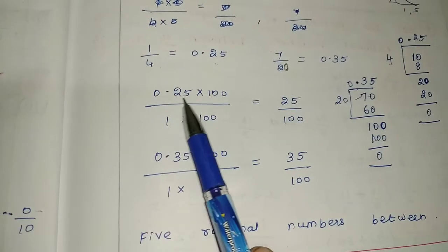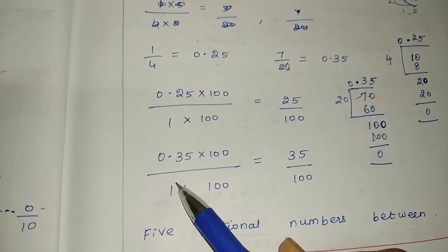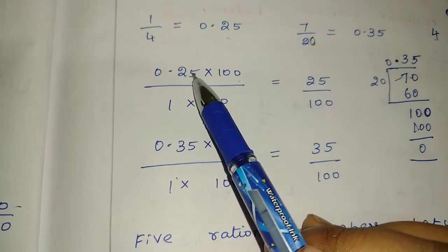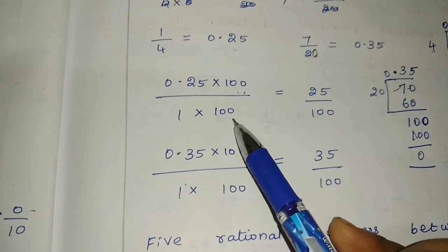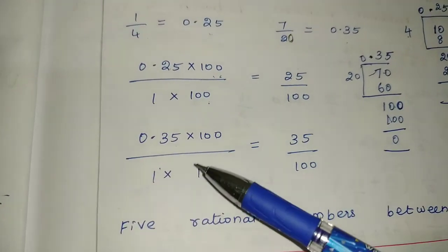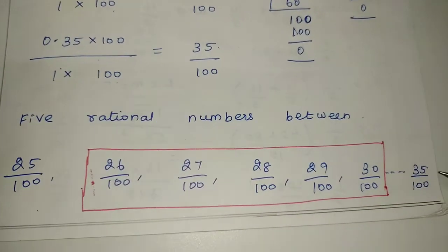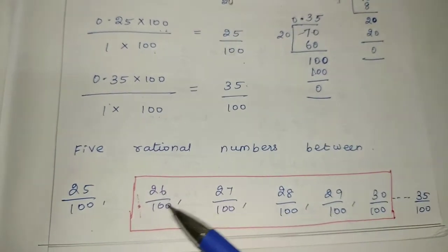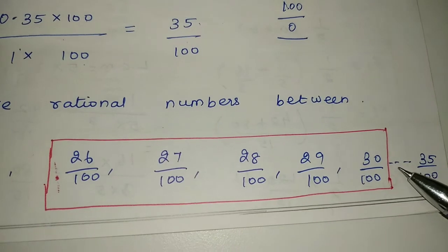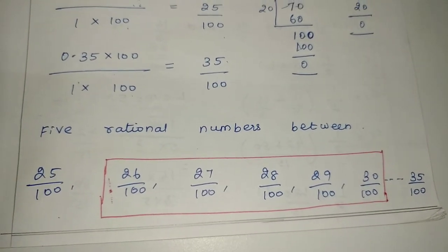The decimal form will be two digits. I will add 1 in the denominator — multiply by 100. In the numerator it will be 100 as well. So 0.25 becomes 25 by 100, and 0.35 becomes 35 by 100. I have 5 rational numbers between them — starting number 25 by 100, ending number 35 by 100. The denominator is equal, so the numerator values are continuous: 25, 26, 27, 28, 29, 30, 31, 32 — and so on. So the 5 rational numbers are 26/100, 27/100, 28/100, 29/100, and 30/100. Clear? Thank you.